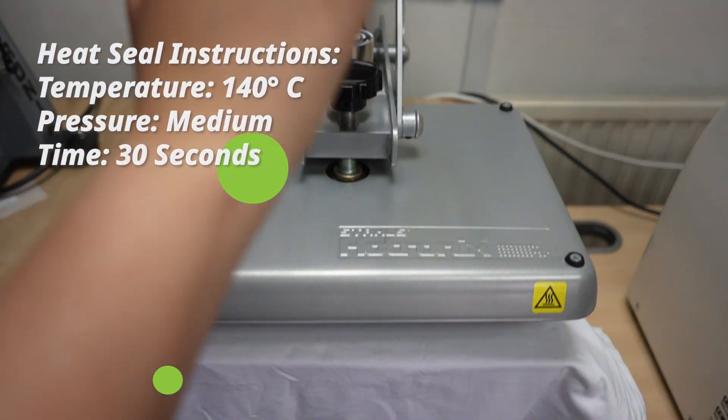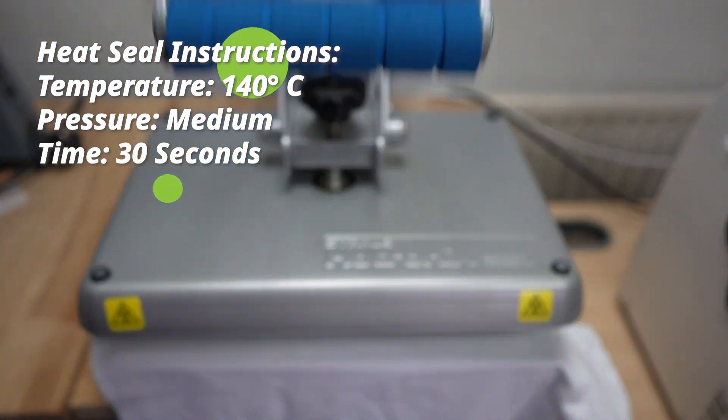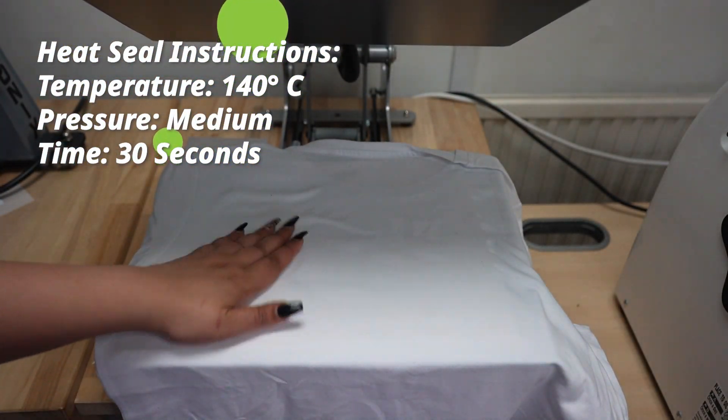I like to lay out a silicone pad to further protect my garment and badge, and then lay the garment on top of it. Now we're going to press this for 30 seconds at 140 degrees Celsius.